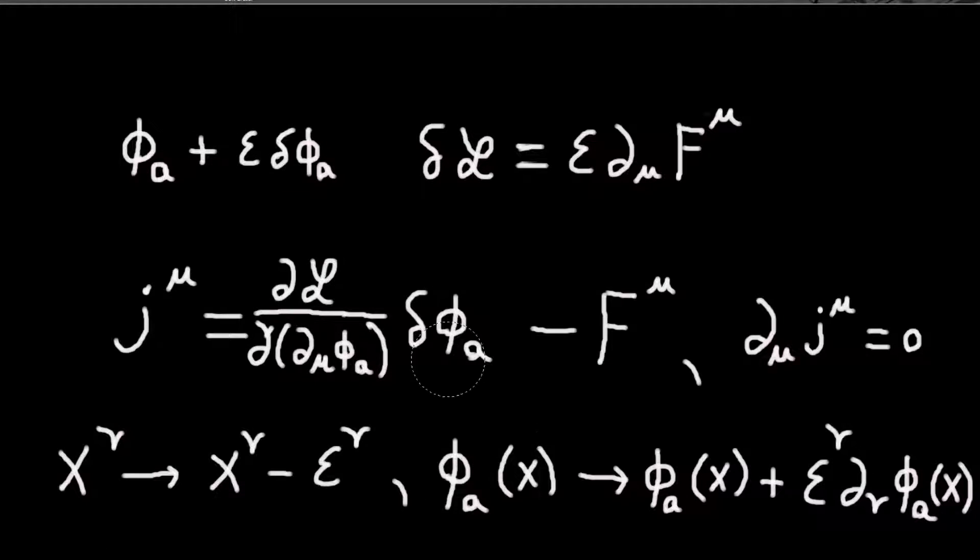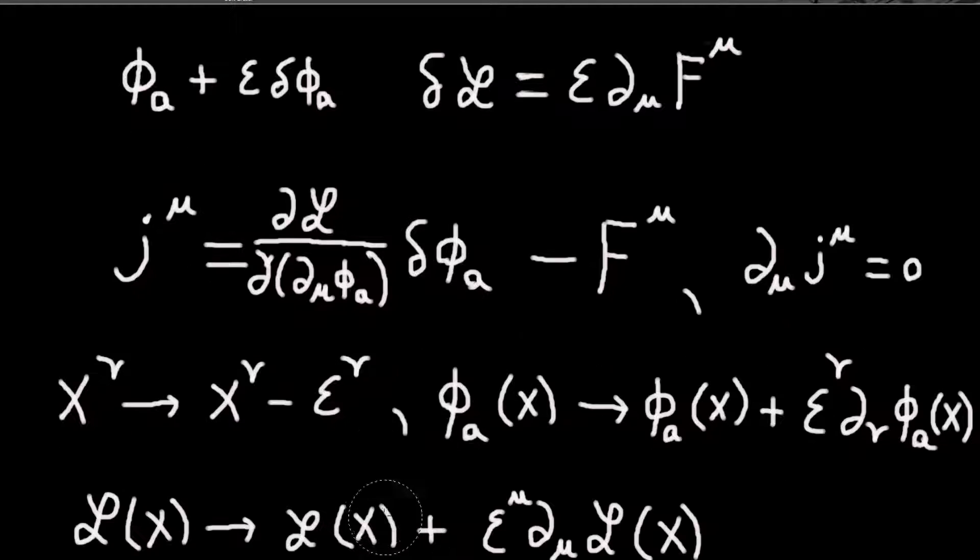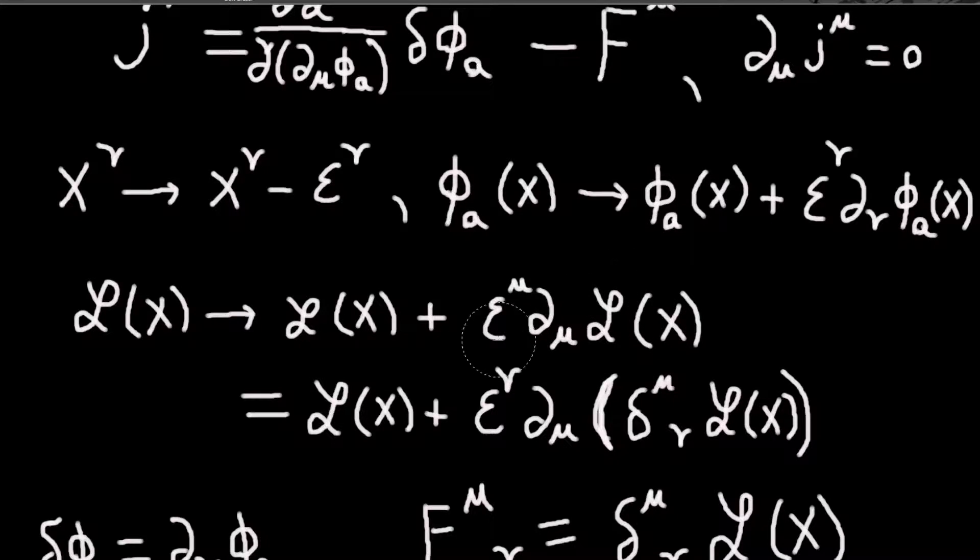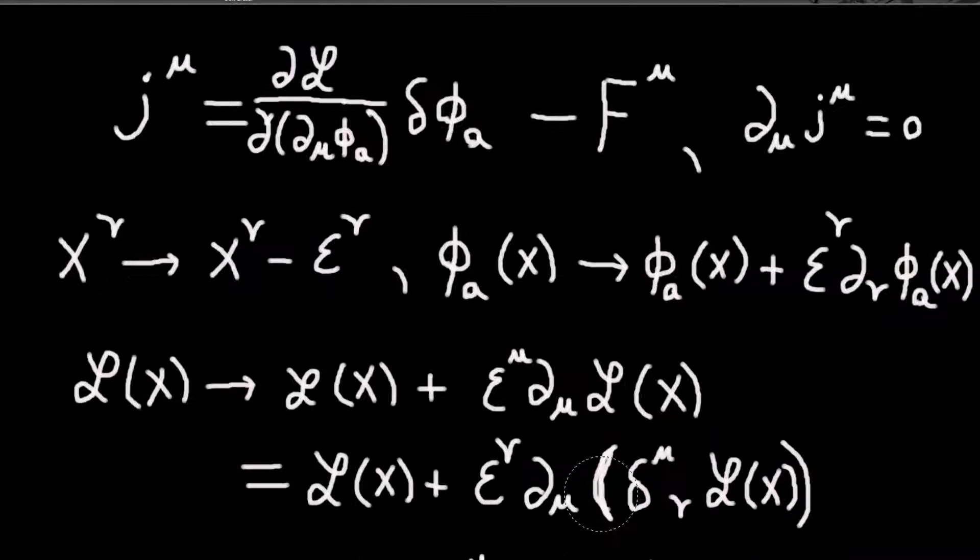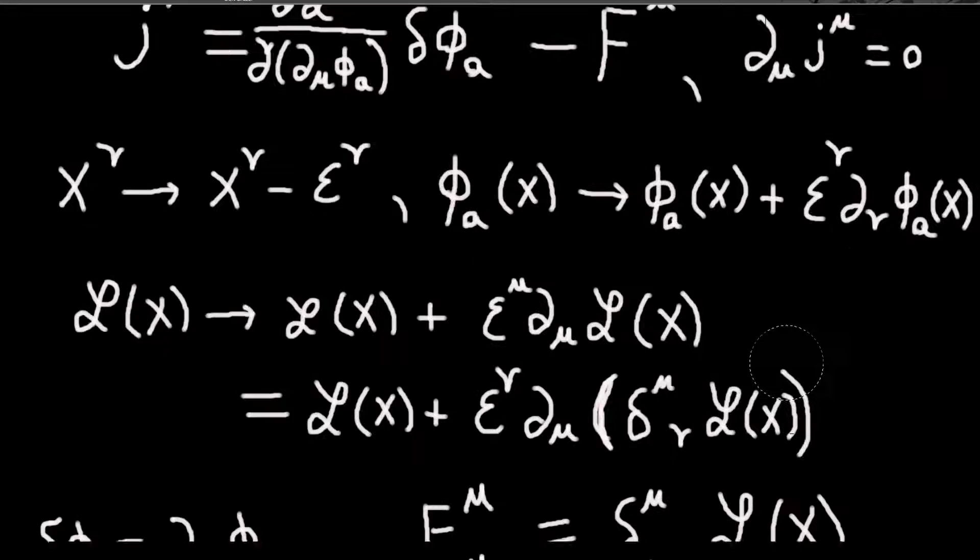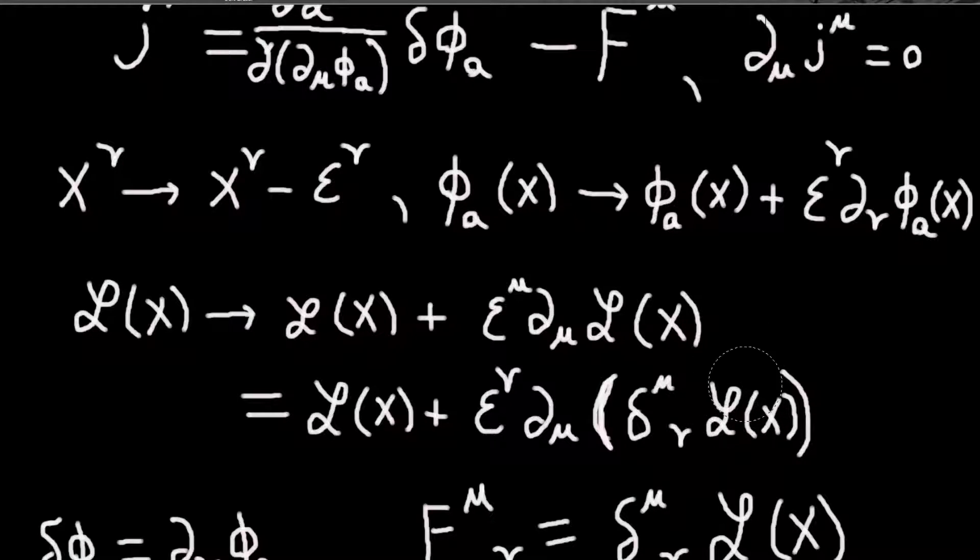One thing I should say is notice here that we sum over the fields. There is a term like this for each field. So the variation in the ath field is given by this. And so if I rewrite this thing, if I insert this delta function here, so I've just written epsilon mu is the same as epsilon nu times delta mu nu. Then this term looks a lot like this.